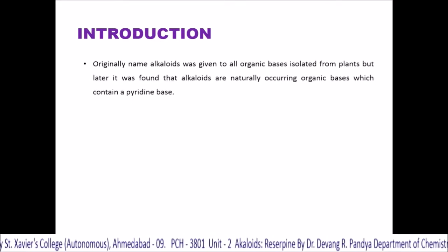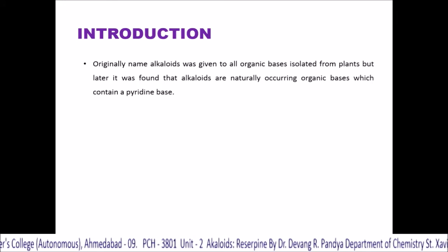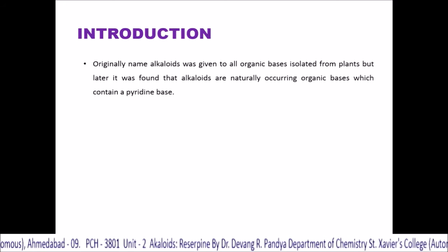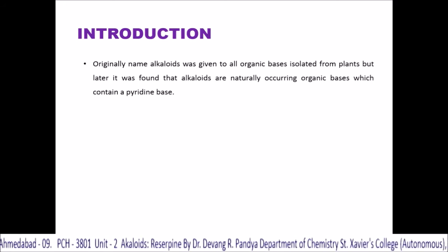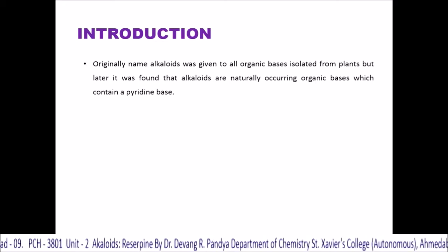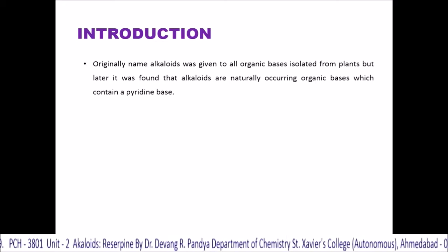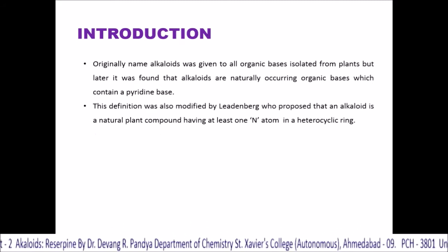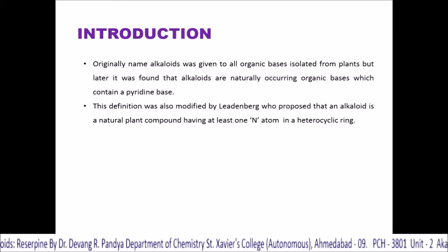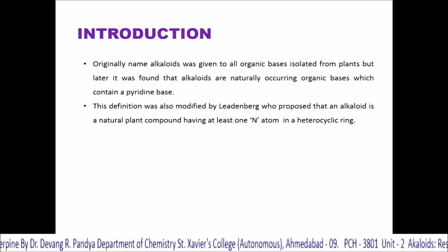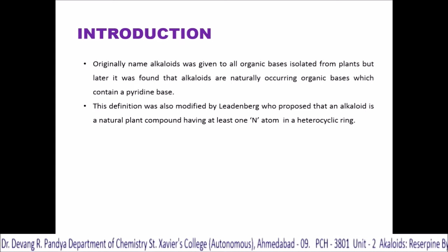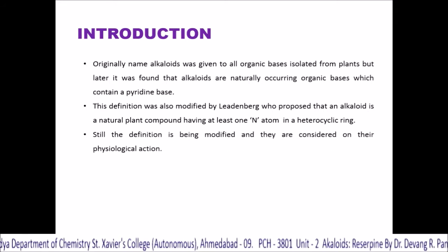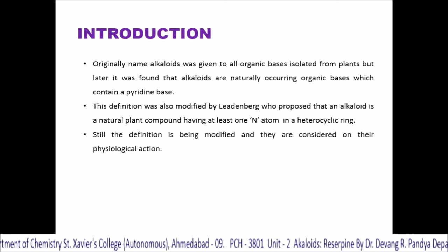Originally, the name alkaloid was given to organic bases isolated from plants. But later it was found that alkaloids are naturally occurring organic bases which contain a pyridine-based ring system. This definition was also modified by Leidenberg, who proposed that an alkaloid is a natural plant compound having at least one nitrogen atom in a heterocyclic ring. The definition is still being modified and they are considered on the basis of their physiological action.